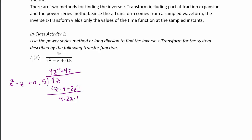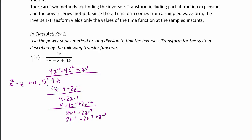The next term is going to be 4Z to the negative 2, and when I multiply that yields 4 minus 4Z to the negative 1 plus 2Z to the negative 2. I subtract again and get 2Z to the negative 1 minus 2Z to the negative 2. I'll do one more step, giving plus 2Z to the negative 3 minus 2Z to the negative 2 plus Z to the negative 3. Subtracting yields negative Z to the negative 3, and so on.